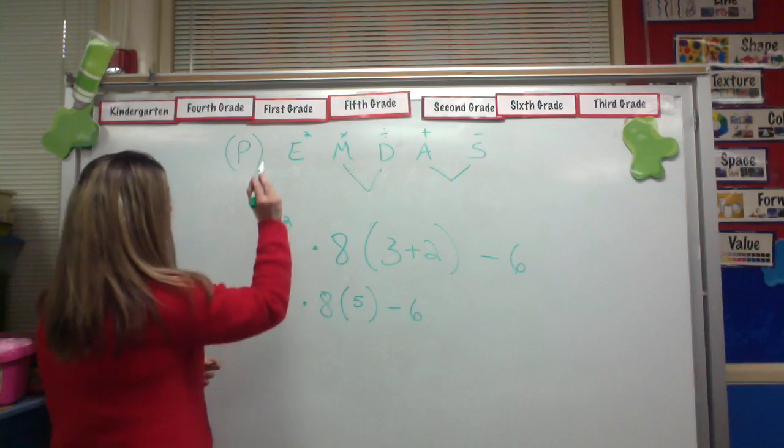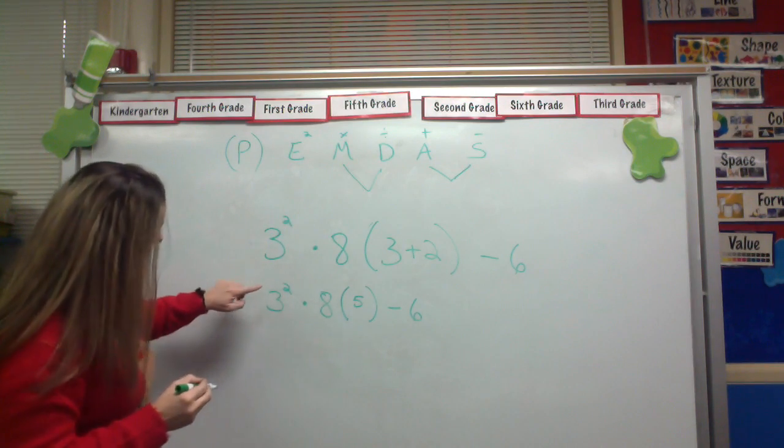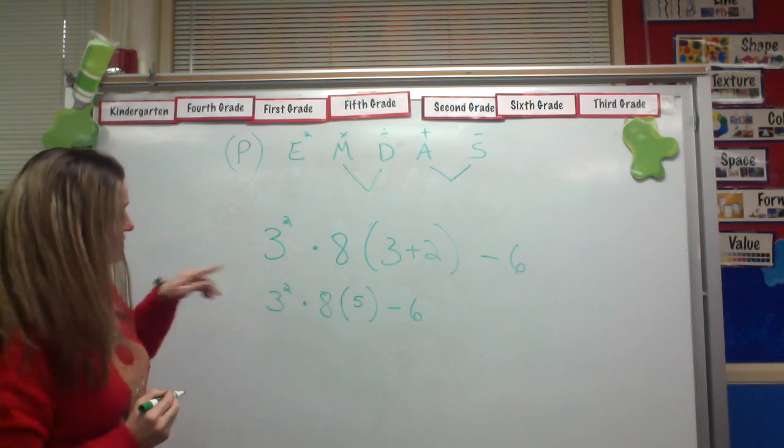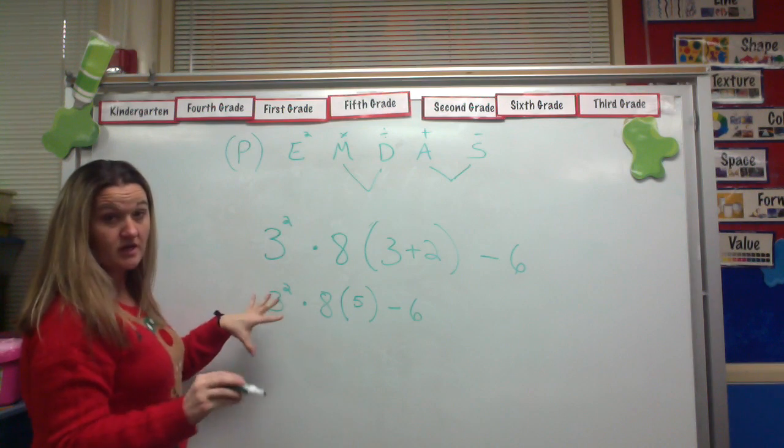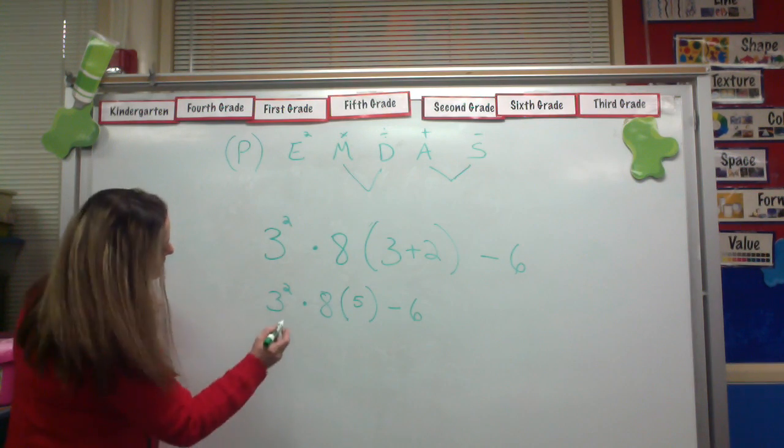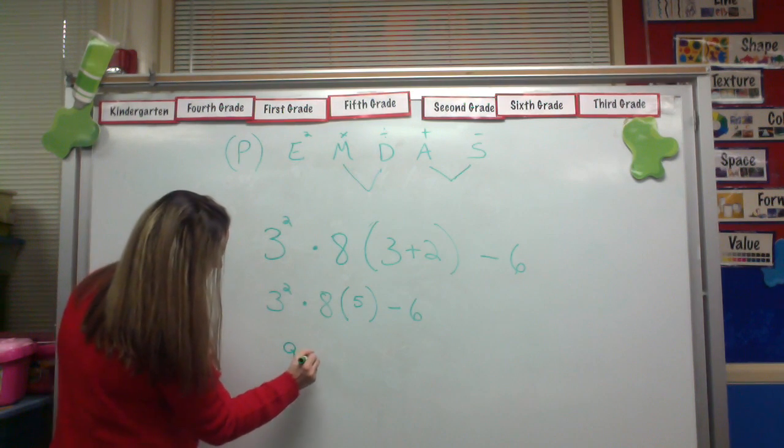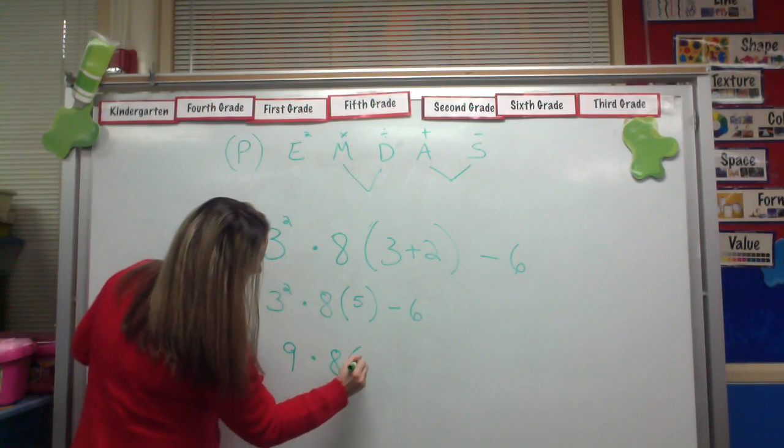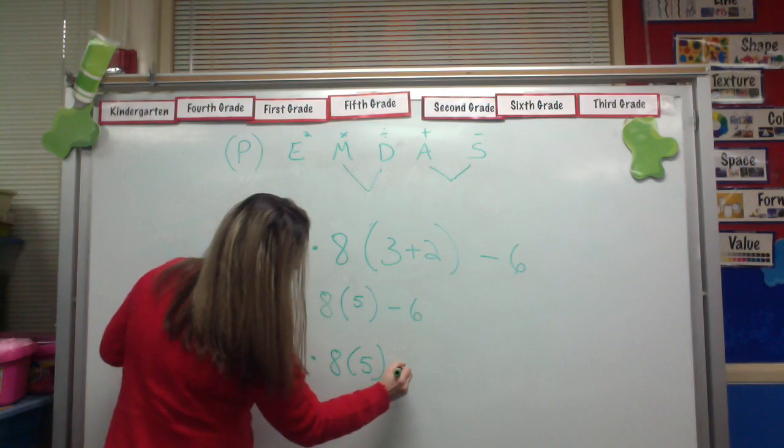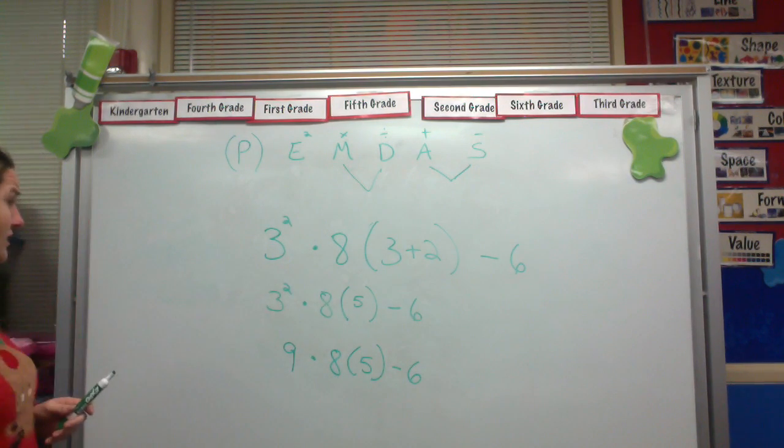Now let's go to the next step, which is exponents. Do I have any exponents? Yes, I do. I have 3 squared. So let's go ahead and simplify that. 3 squared is 3 times 3 is 9, times 8 times 5 minus 6.